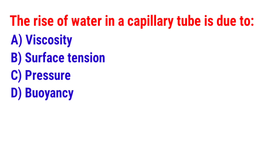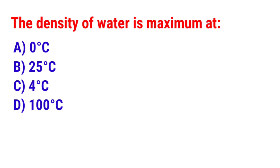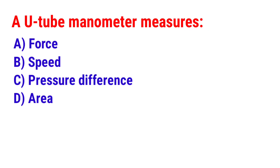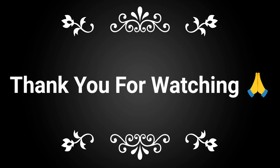Next question: The rise of water in a capillary tube is due to? The answer is option B — Surface tension. Next question: The density of water is maximum at? The answer is option C — 4 degrees centigrade. Next question: A manometer measures? The answer is option C — Pressure difference. Thank you for watching. Please subscribe to my channel for more videos.